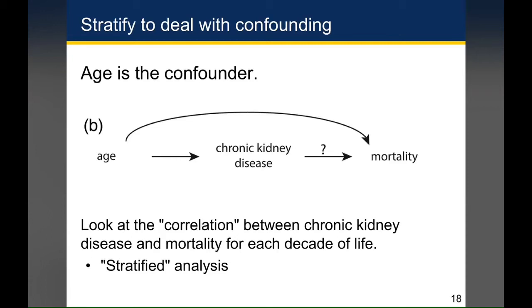This is just how you might approach the analysis. In the earlier example of smoking and coffee causing heart disease, you could look separately at the relationship between coffee and heart disease among those people who smoke and among those who don't smoke. That would be a way of using stratification to deal with confounding, giving you a more representative answer that's actually more likely to be true as a measure of that association.